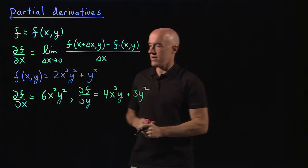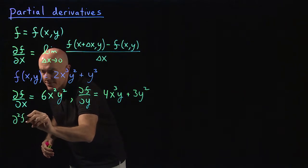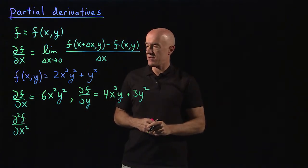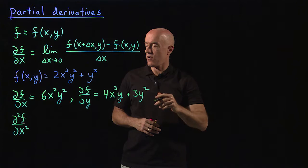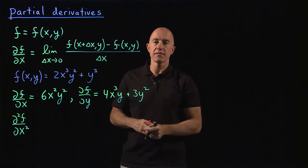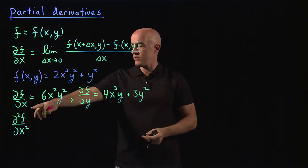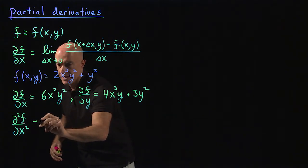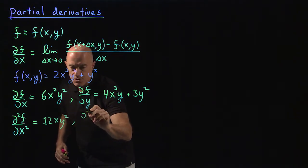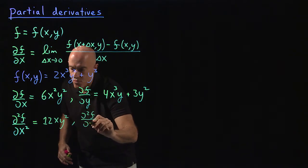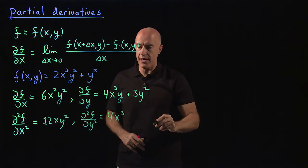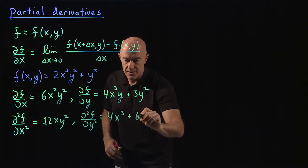How about second derivatives? The second derivative of f with respect to x — written as partial squared f over partial x squared — you just keep differentiating, so this should be 12xy squared. And partial squared f with respect to y would be 4x cubed — differentiating y — plus 6y.